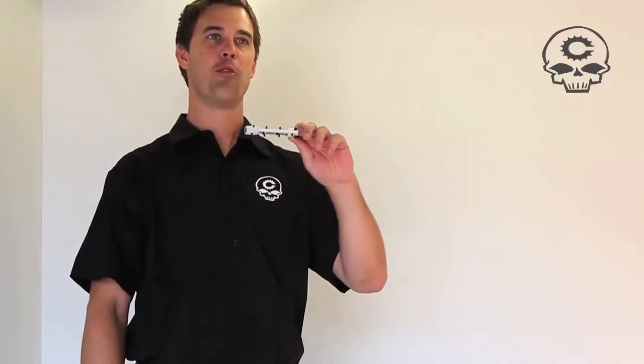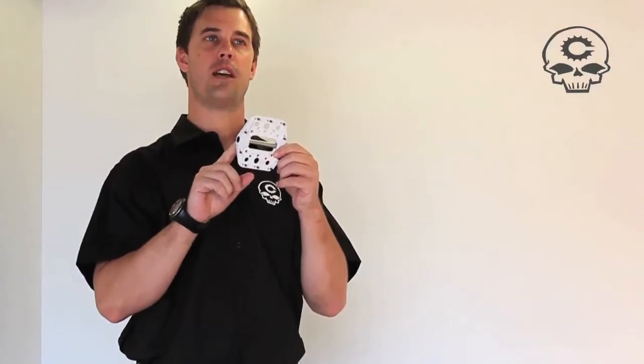The Crampon is a super flat, high performance platform pedal. It weighs 395 grams. It runs a DU bushing on the inside and two sealed bearings on the outside.